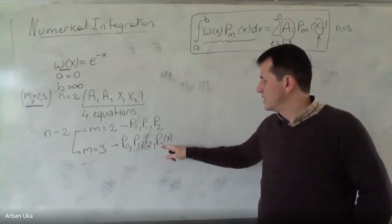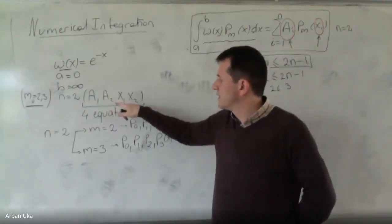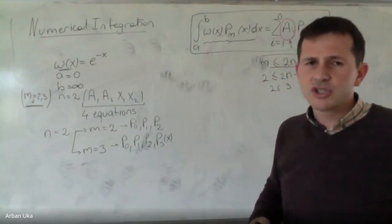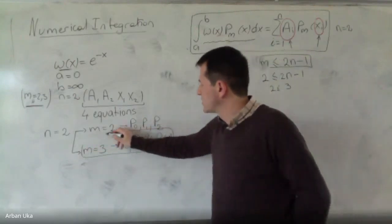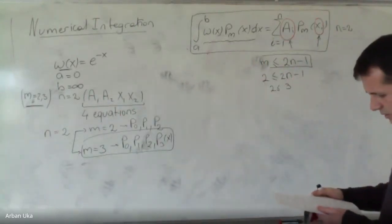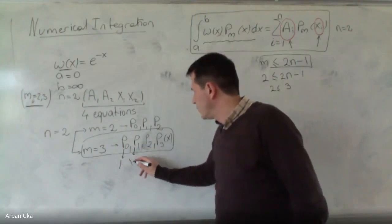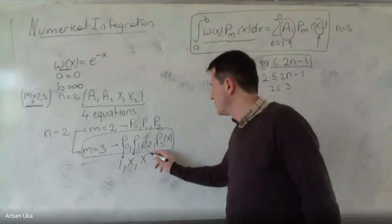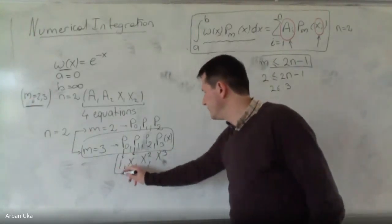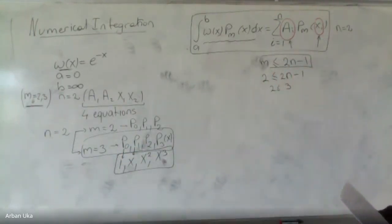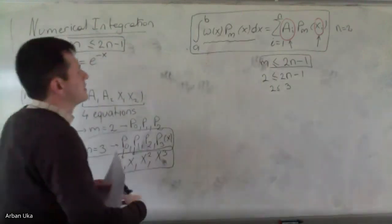So if we use p0, p1, p2, and p3, we can make up four equations. That's what numerical analysts do to prepare these tables for engineers. So for p0 we get the term 1, for p1 we have x, for p2 we have x squared, and for p3 we have x cubed. These are the highest order polynomials, and importantly m equals 2n minus 1.